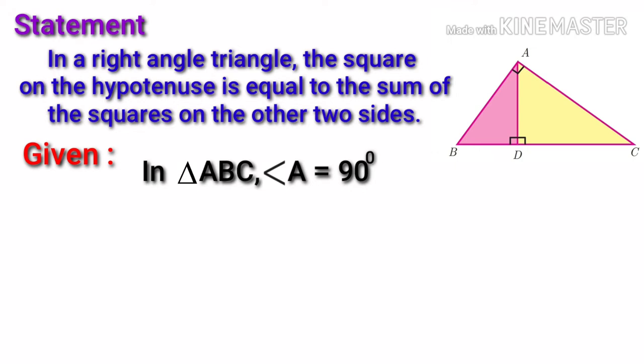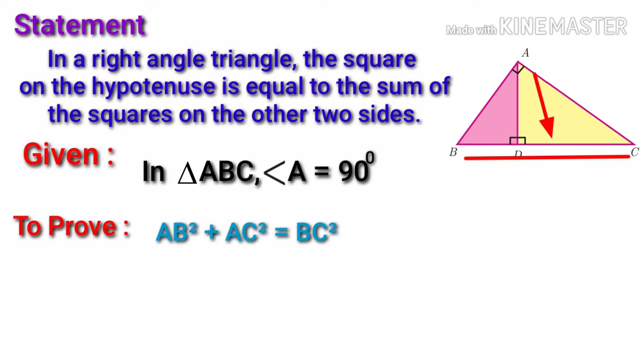We have to prove the sum of the squares on the other two sides, i.e. AB and AC. The side opposite to right angle is hypotenuse, i.e. BC. So AB square plus AC square is equal to BC square.